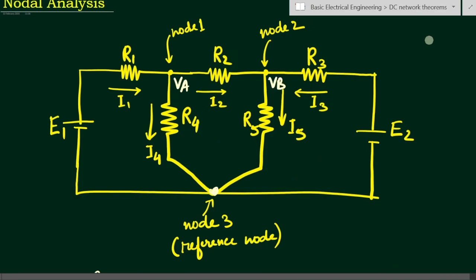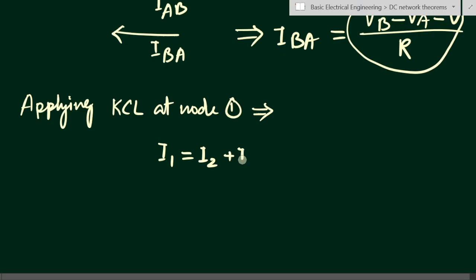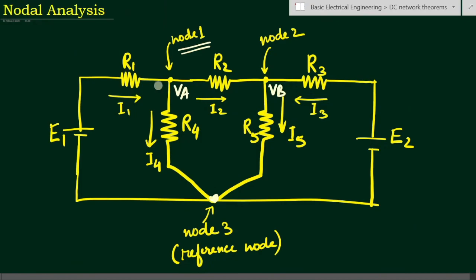Now for node one, we apply Kirchhoff's current law. According to KCL, the amount of current entering a node equals the amount leaving. Current I1 is entering node one, while I2 and I4 are leaving. Therefore: I1 = I2 + I4.